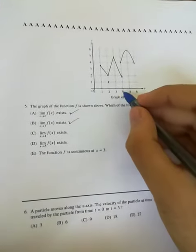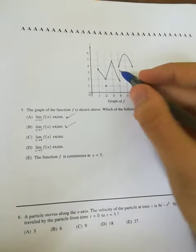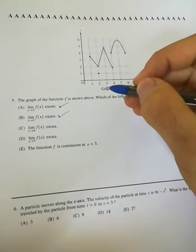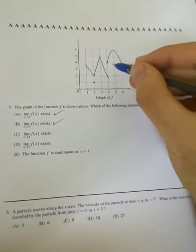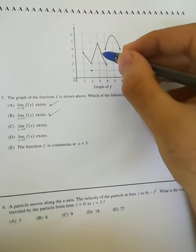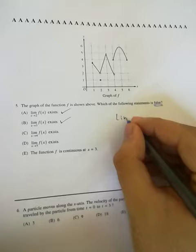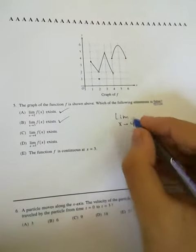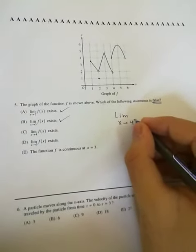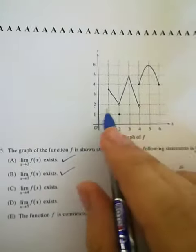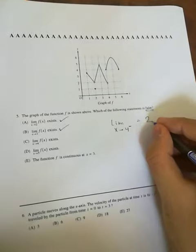Lim as x approaches 4. Let's go from the left side. Let's see if the left side is equal to the right side or not. As x approaches 4 from the left, as x approaches 4 from the left side, is equal to 2. A very small number. Let's say it's 2.